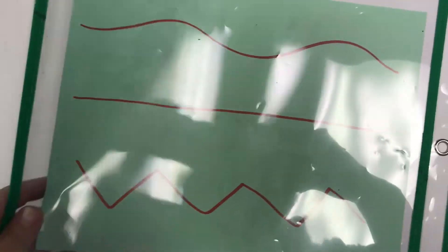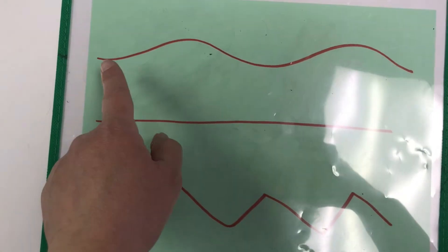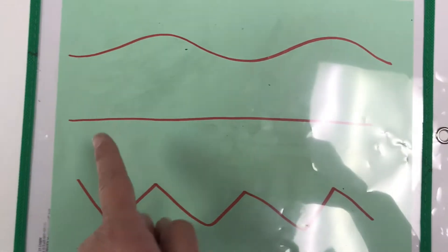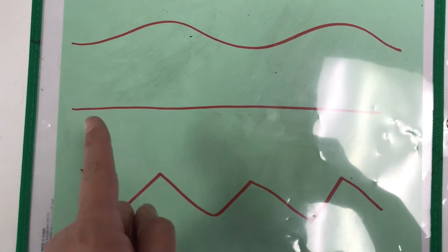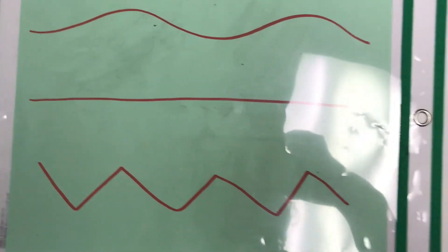After you have drawn your lines, as you can see here I have different types of lines: a straight line, a squiggly line, and a little more of a jagged line.